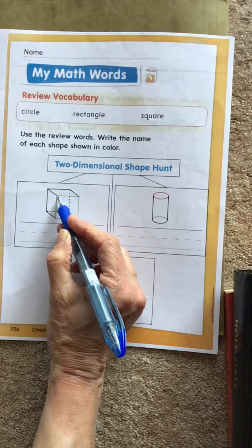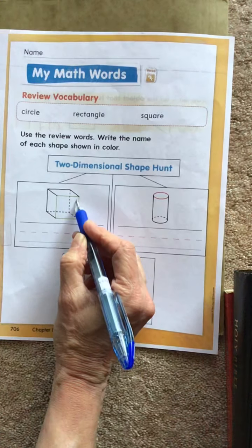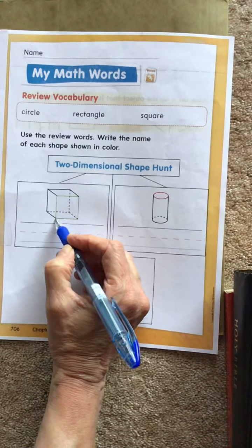So down here, this is a cube, but what is this shape? It's the face of a cube. It's a square, so you're going to write square.